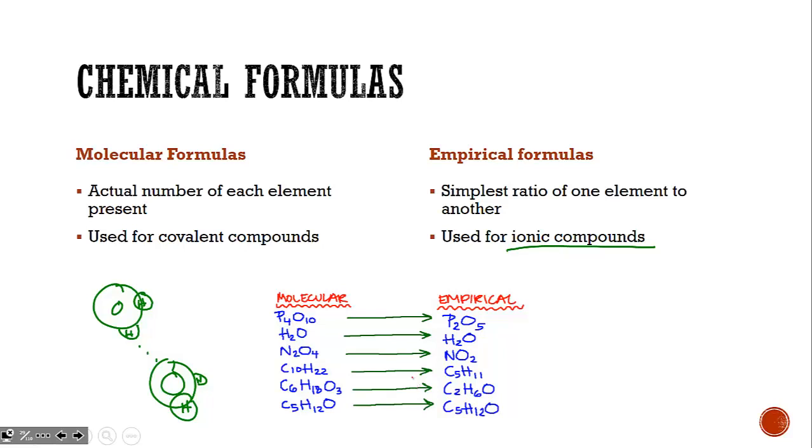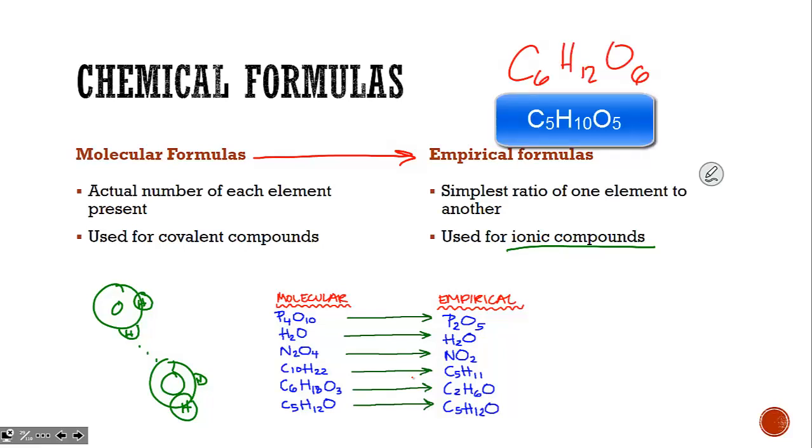Covalent compounds are held together by attraction of valence electrons for nuclei. For covalent compounds, the number of each atom present is given in their molecular formulas. However, you can simplify molecular formulas down to empirical formulas, such as with hydrocarbons.